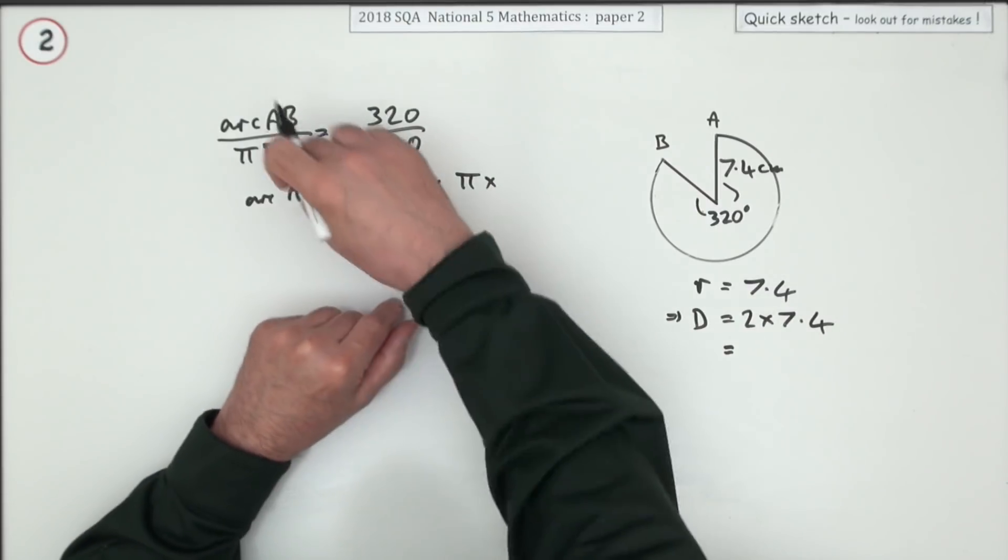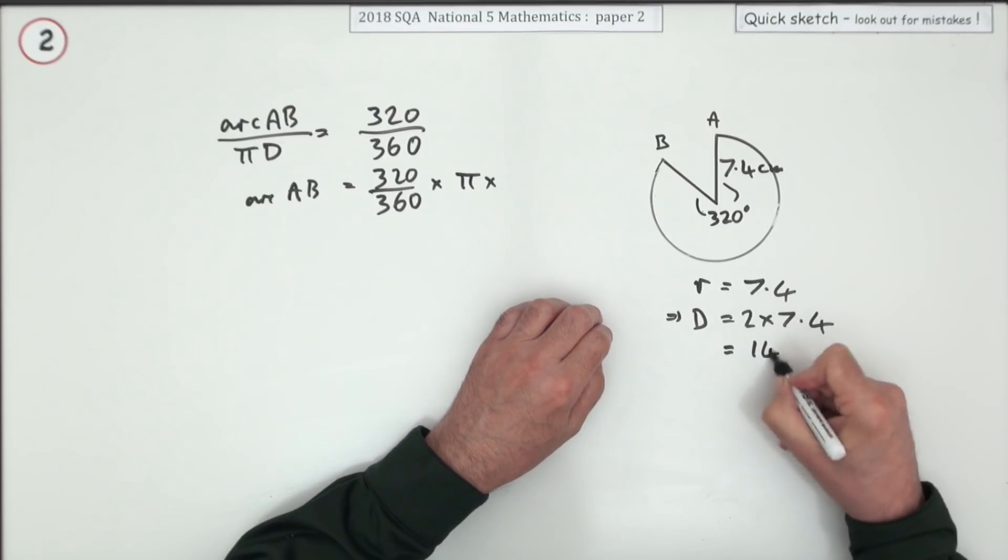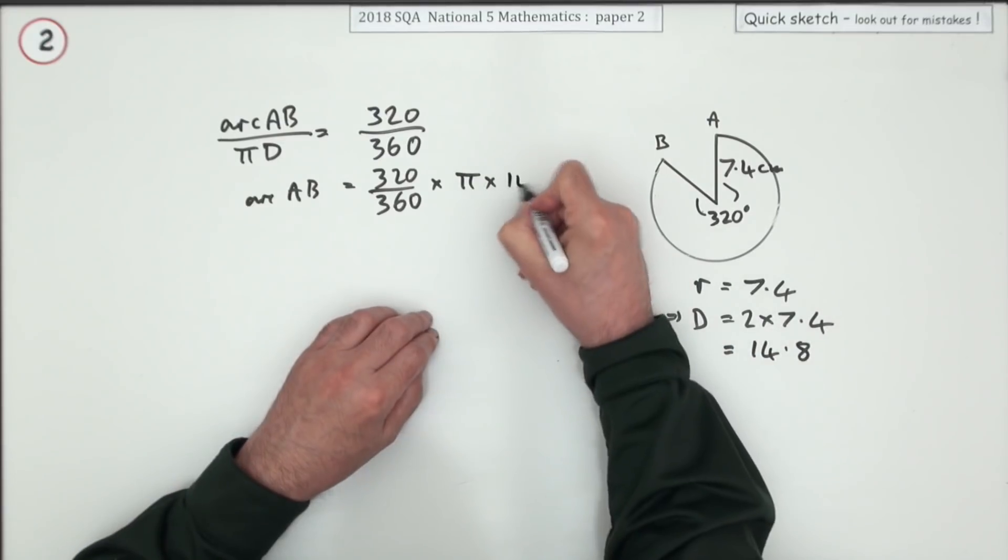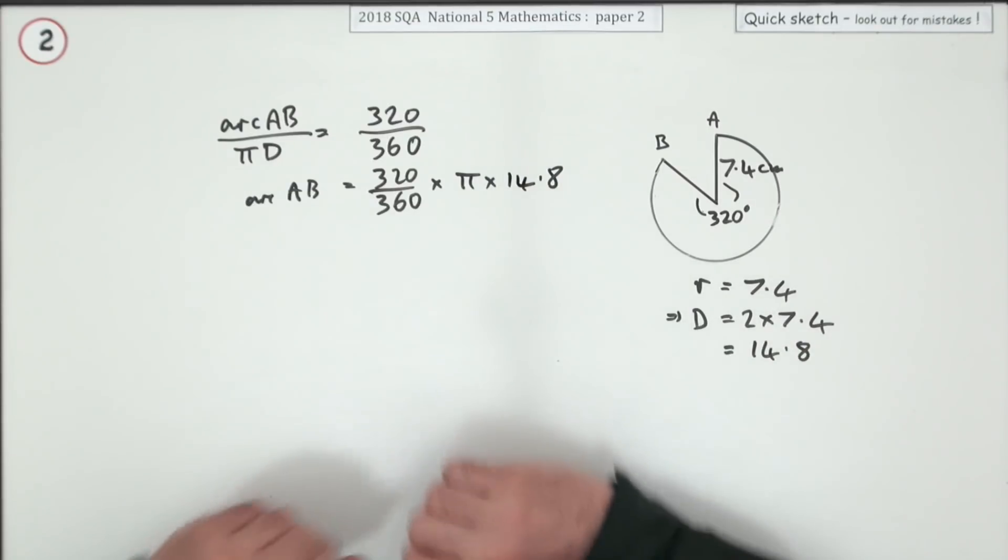I prefer the old days when you had circumference you just put 2 pi R. 2 times that which is 14.8. That was all a bit of a waste of time really. Now you just use your calculator.